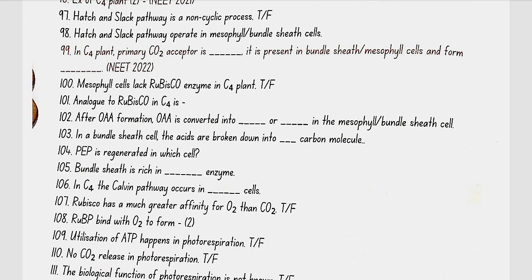In C4 plants, the primary CO2 acceptor is PEP (phosphoenolpyruvate), present in mesophyll cells, and it forms oxaloacetic acid (OAA). Mesophyll cells lack the RUBISCO enzyme in C4 plants. The analog to RUBISCO in C4 is PEP carboxylase. After OAA formation, oxaloacetic acid is converted into malic acid or aspartic acid in the mesophyll cell.